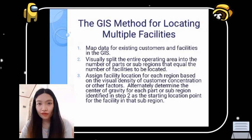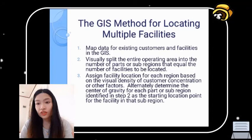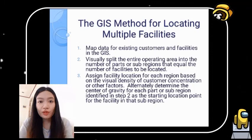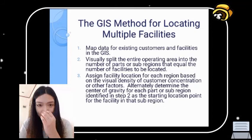The GIS method for locating multiple facilities: GIS tools can help you visualize your location and its information, such as streets, buildings, vegetation, transportation structure, roads, and interstate highways. These capabilities allow analysts to quickly arrive at a reasonable solution to multiple facility location problems. Here is a five-step framework that captures the use of GIS for locating multiple facilities.